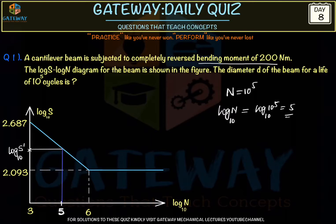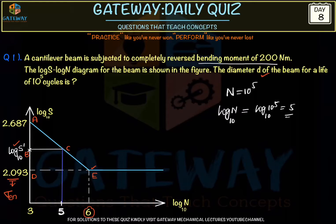Let points A, B, C, D, E be defined on the curve. At 10^6 cycles the line becomes straight — this is the endurance limit. Our concern is calculating S′ (not the endurance limit) so that we can then determine the diameter. Triangles ABC and ADE are the similar triangles.